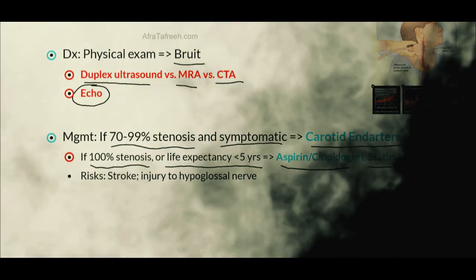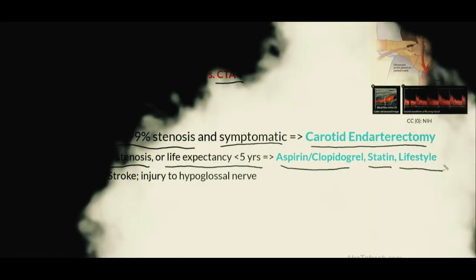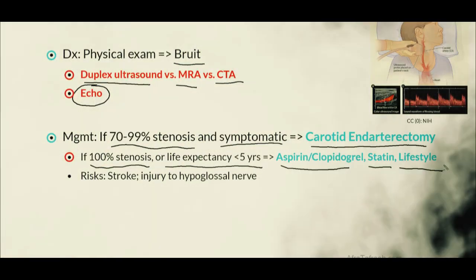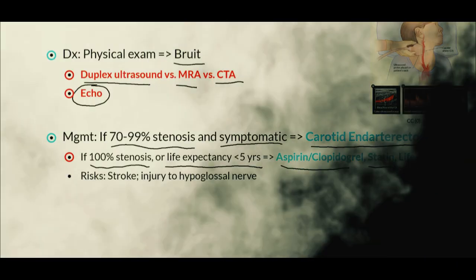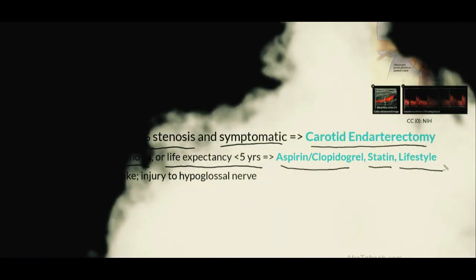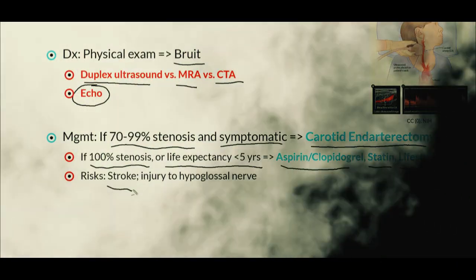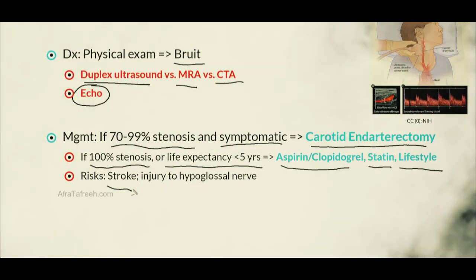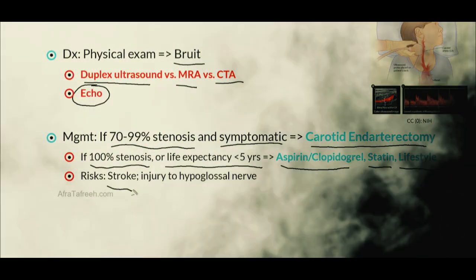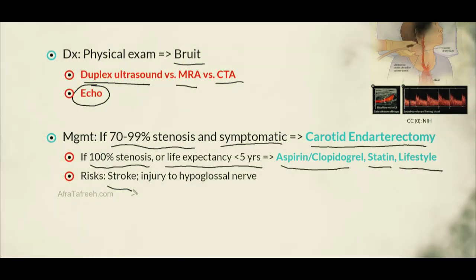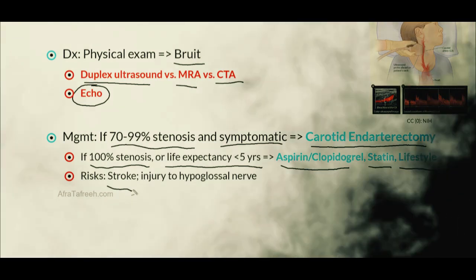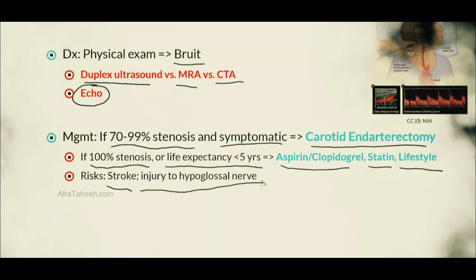The reason we do not perform endarterectomies in all patients is because there are important risks to be aware of. The most important are, first, stroke — when we perform the endarterectomy, the plaque can sometimes embolize during the procedure and travel to the brain. This occurs in about 1% of cases. Additionally, these patients are at risk for injury to the hypoglossal nerve, which crosses in front of the carotid artery.